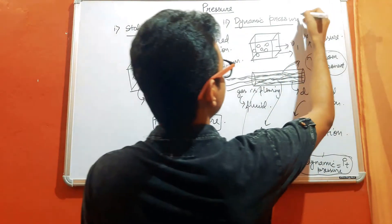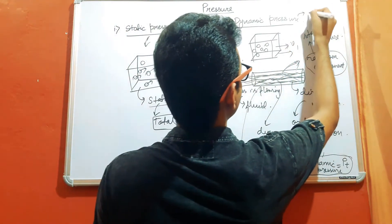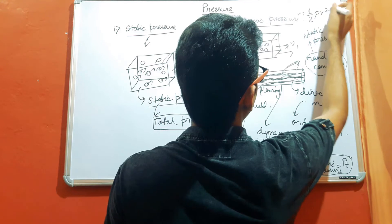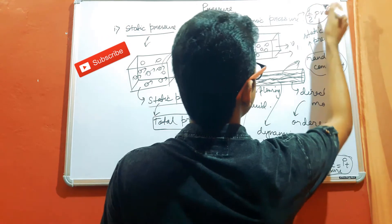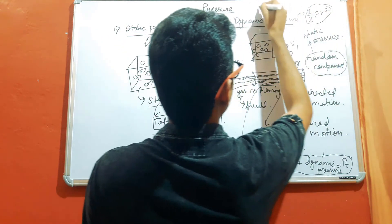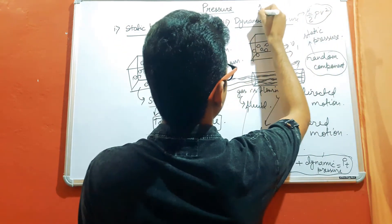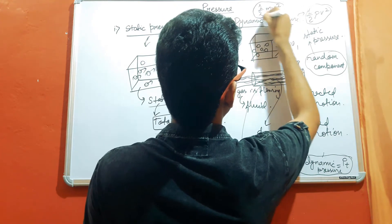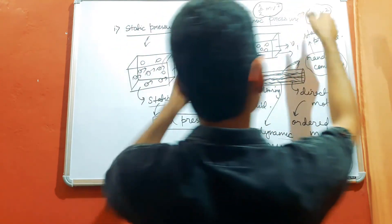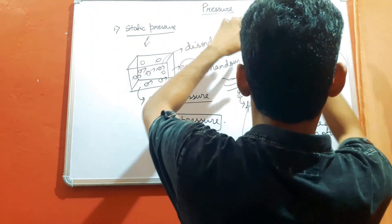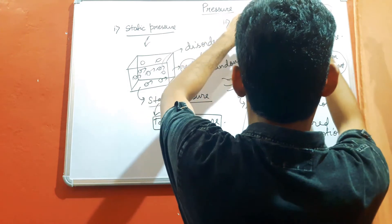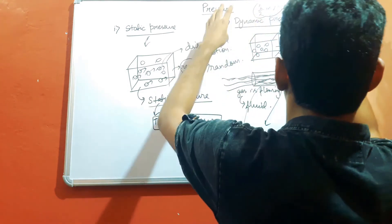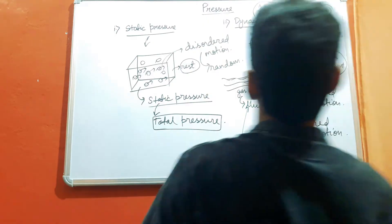Now we all know that the dynamic pressure is given by half into density into velocity square, and this looks pretty much similar to the term kinetic energy, that is half into m into v square. So let us see what is the difference between these two — dynamic pressure and kinetic energy — because this is also a confusing term.